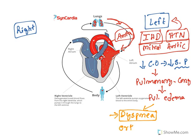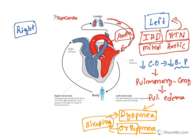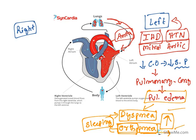Another condition called orthopnea also occurs. Ortho refers to position — specifically, the lying or sleeping position. When we are in a lying position, venous return of blood to the heart increases, meaning more blood enters the heart and pulmonary congestion increases further. So people with left ventricular heart failure experience increased breathing difficulty at night. That condition is called orthopnea. So left ventricular failure results in pulmonary edema, and the symptoms are dyspnea and orthopnea.